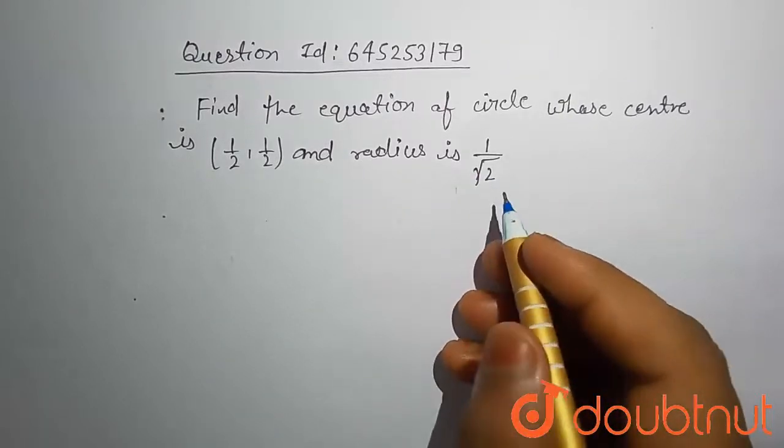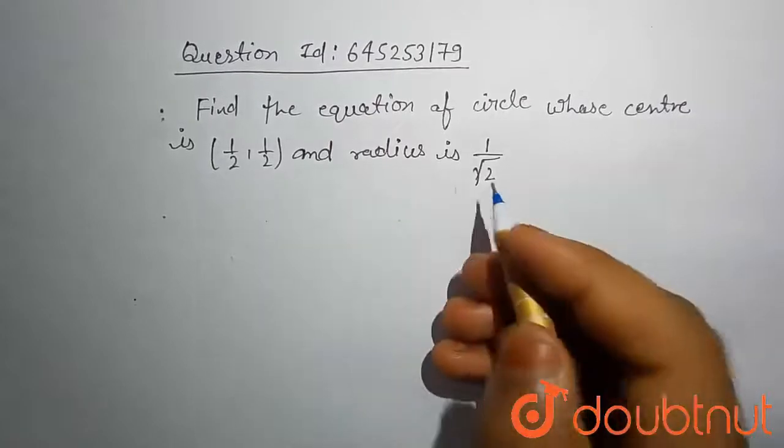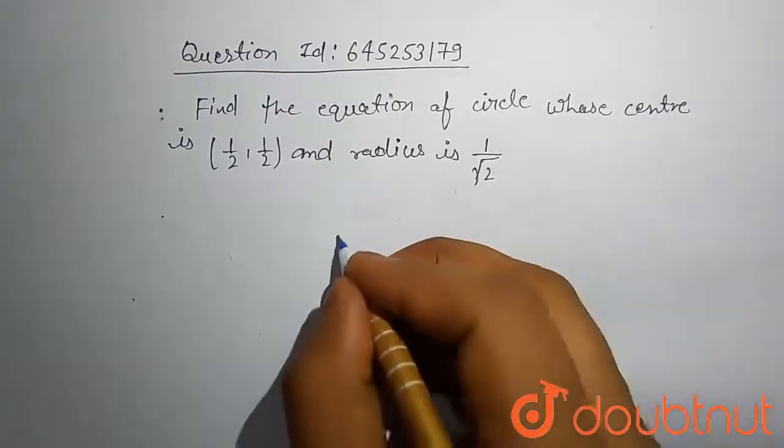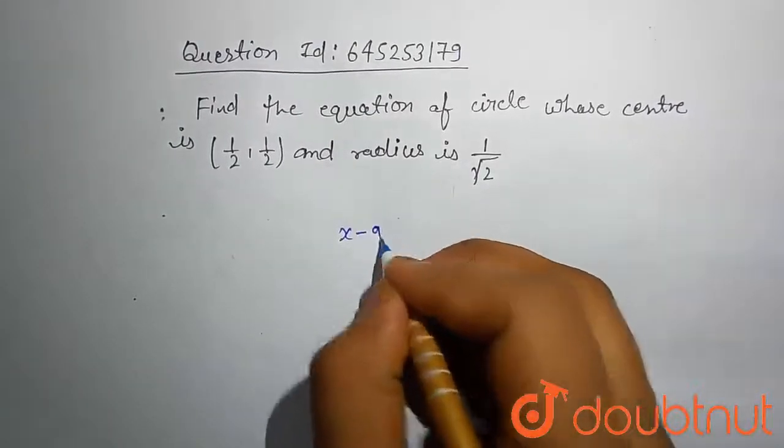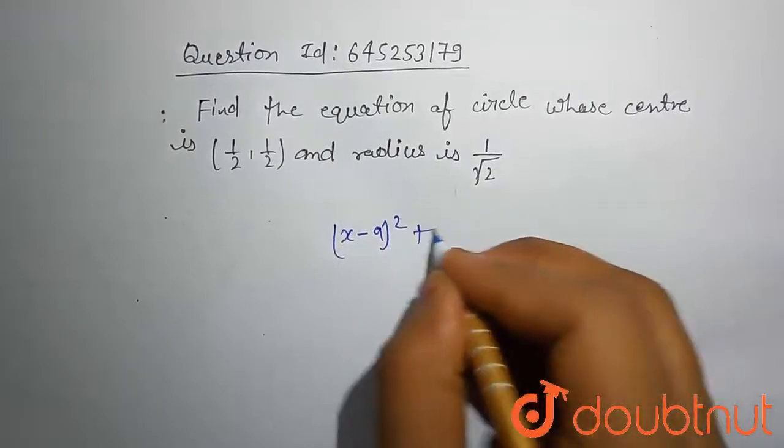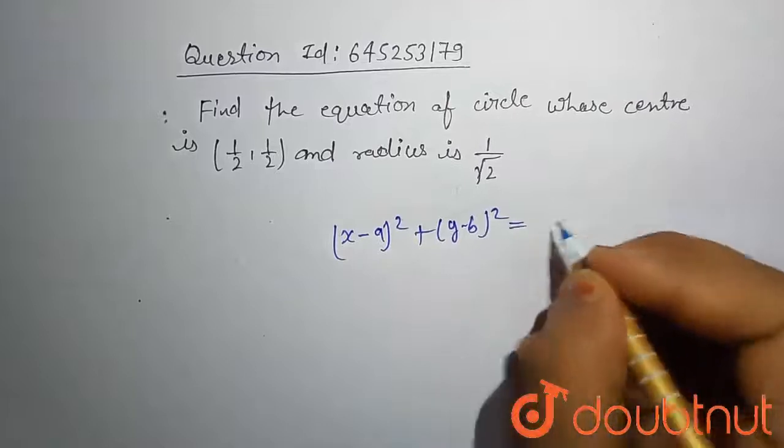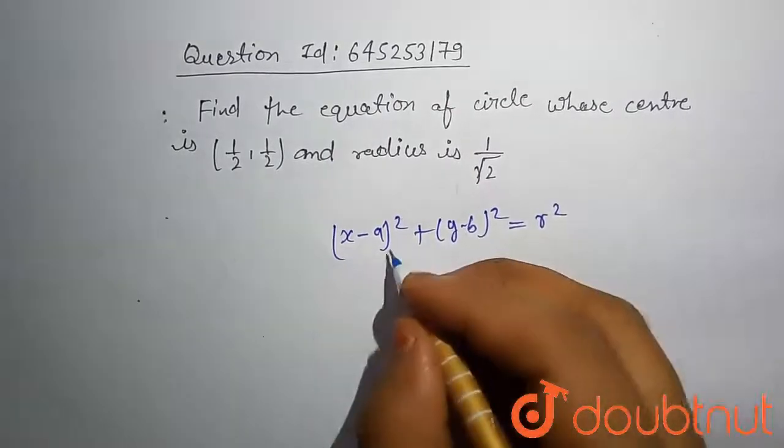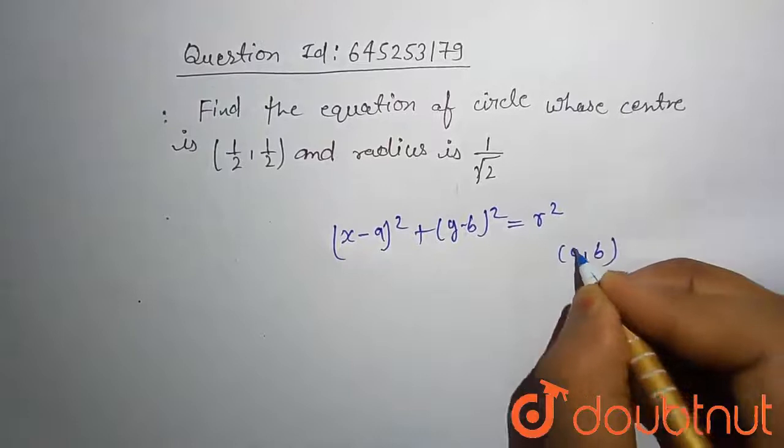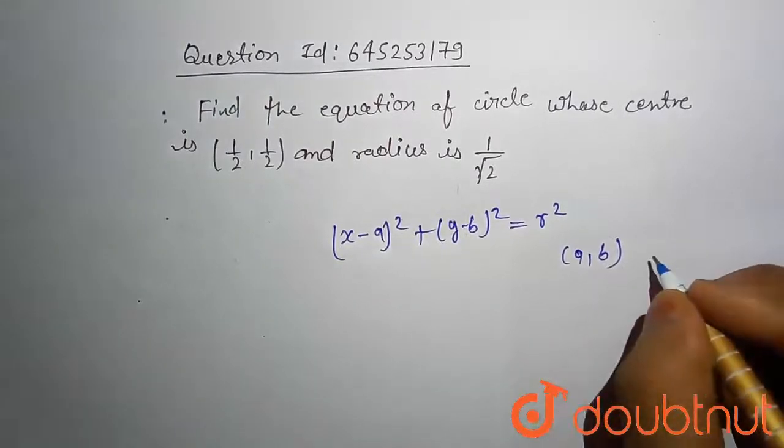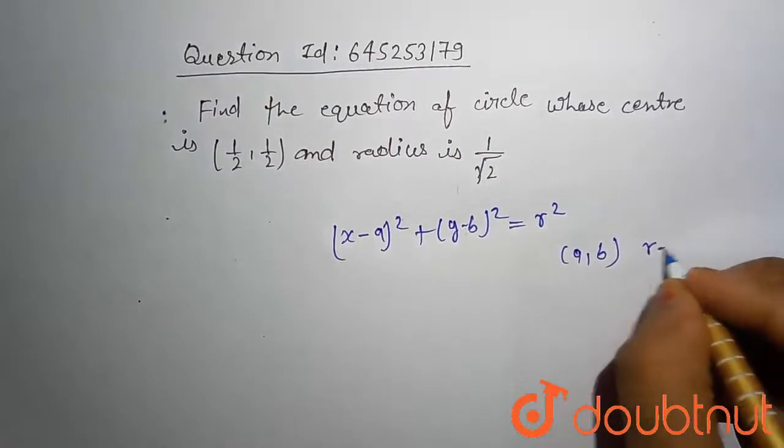We know the formula, if you know center and radius, then our formula is, x minus a whole square plus y minus b whole square is equal to r square. Here a comma b is our center coordinate and r is our radius.